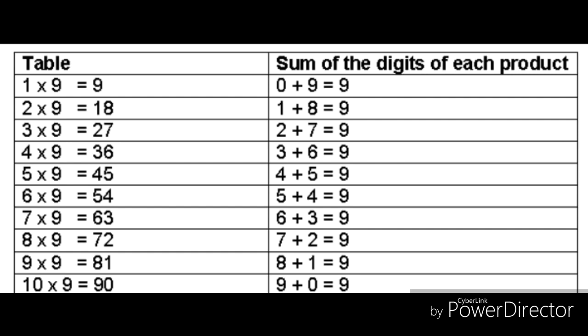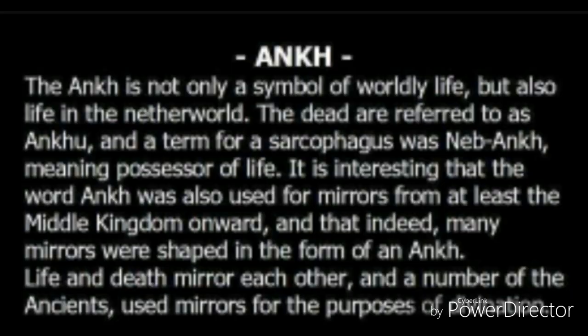Meaning 11 is a compound of two ones. 12 is a compound of a 1 and a 2. They're not numbers — they're compound figures. So 9 is the highest number.